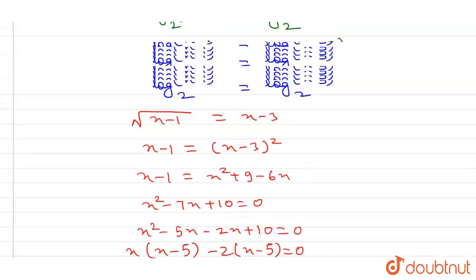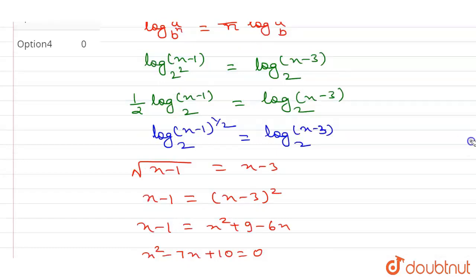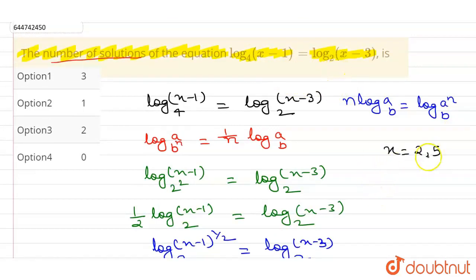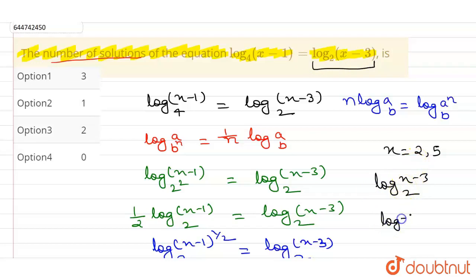The value of x is 5 or x is 2. Now we check these in the original logarithmic equation. Looking at log (x minus 3) to the base 2: if we put x equals 2, this becomes log of (minus 1) to the base 2, which is not defined.